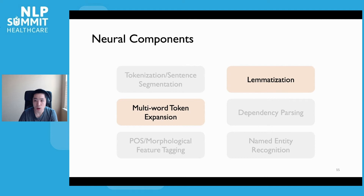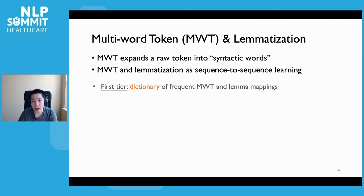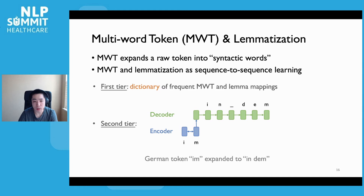Next, let's take a look at the multi-word token expansion and lemmatization modules, which largely share the same architecture design. The multi-word token module expands a raw token into multiple syntactic words, making universal dependency analysis easier for many languages. We model both tasks as sequence-to-sequence problems. For the multi-word token module, we first use a dictionary to cache all frequent mappings from a token to its underlying words, and when the dictionary fails, a neural encoder-decoder model decodes the syntactic words from the token. A similar architecture is used for lemmatization, where the lemma sequence is decoded from the neural representation of a word.